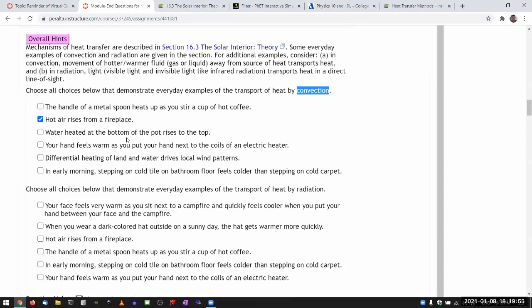Water heated at the bottom of the pot rises to the top. This is a common example in cooking. You heat pots from bottom and you might have seen actual movement of water. If you look at the boiling or before it starts to boil the pot of water, you might see the movement of water. Even though you're applying heat only at the bottom, the water at the top also gets heated through that movement of water. So that's by convection.